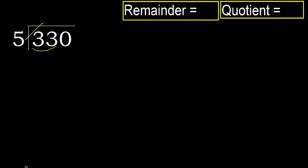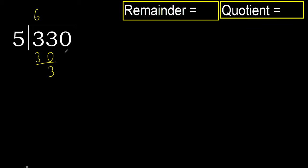5 multiplied by which number is nearest to 33 but not greater? 5 multiplied by 7 is 35 — 35 is greater. 5 multiplied by 6 is 30, it is not greater. Subtract: 33 minus 30 equals 3.